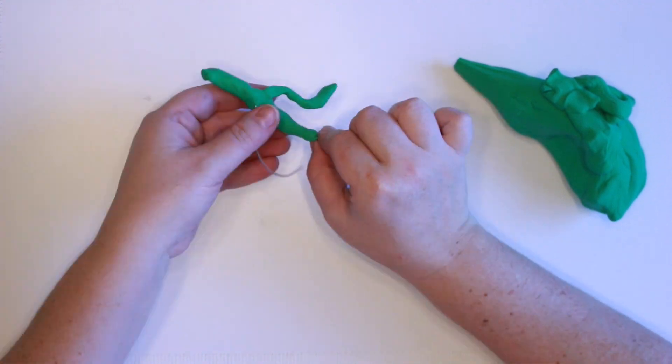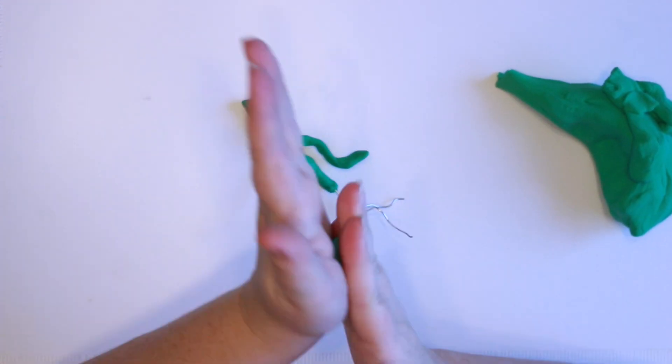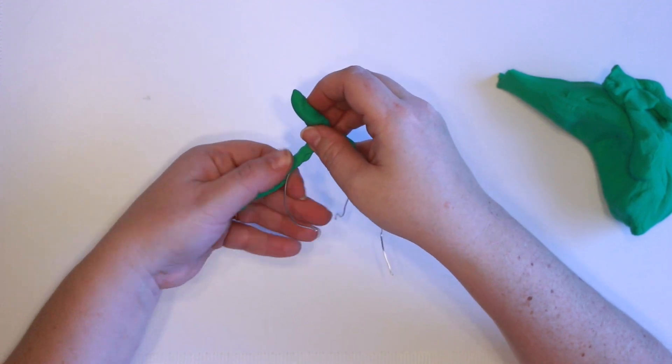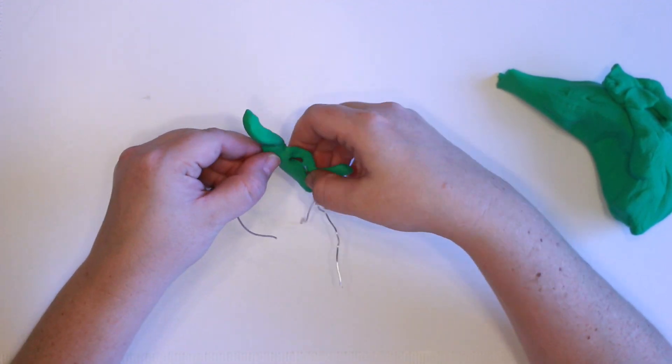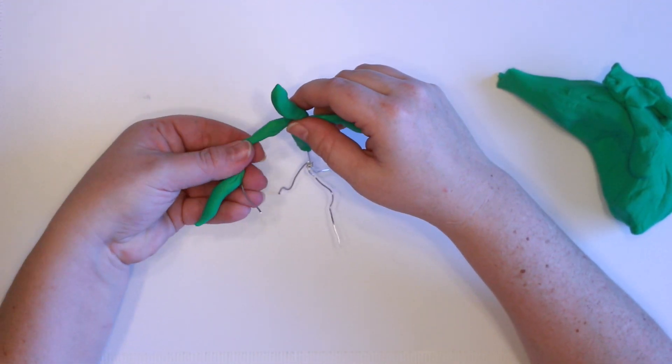So just work the clay down along that wire framing and we'll start to really shape him in the next step.